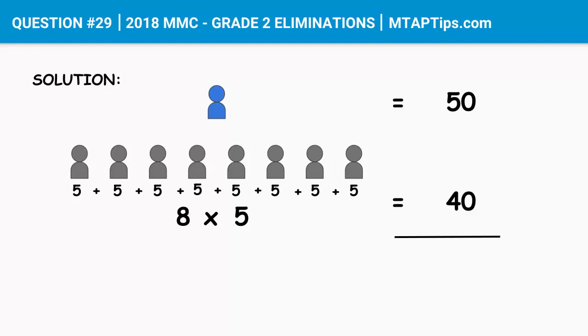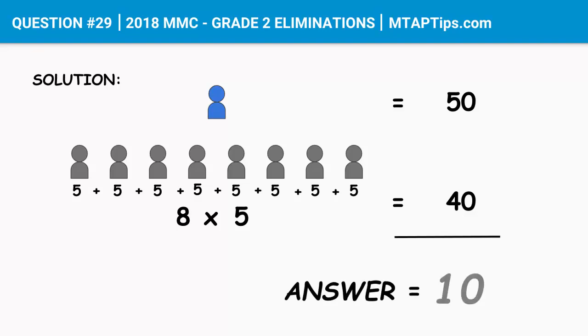So, 50 minus 40, the answer is 10. There are 10 candies left.